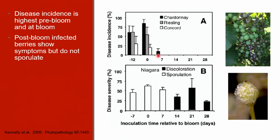In the bottom graph, disease severity was measured as the percentage of cluster surface that either supported sporulation or was discolored — discoloration represented as dark black bars and sporulation as light bars. These data indicate that infections can occur from seven days pre-bloom to at least 28 days post-bloom, but berries do not sporulate after 14 days post-bloom, which corresponds to about pea size. So there were infections, but no sporulation on these berries.